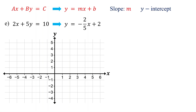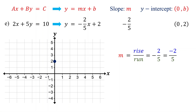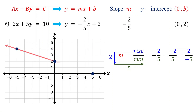First, identify the slope and the y-intercept. The slope is negative 2/5, and the y-intercept is (0, 2). Next, plot the y-intercept. Then plot another point using the slope. Place the negative sign in the numerator. So the rise is 2 units down, and the run is 5 units to the right. Starting from the y-intercept, move down 2 units. Then move to the right 5 units and plot the second point. Now pause the video and plot another point on the opposite side. Change the signs of both the numerator and the denominator. With the modified slope, starting from the y-intercept, move up 2 units, then to the left 5 units, and plot the third point. Finally, draw a line that passes through the points.